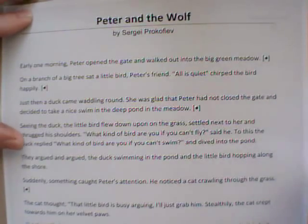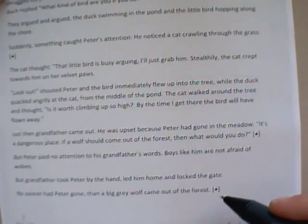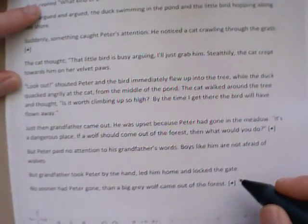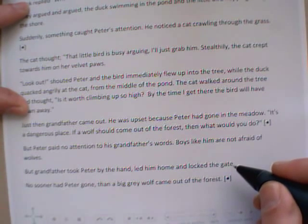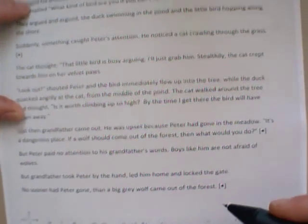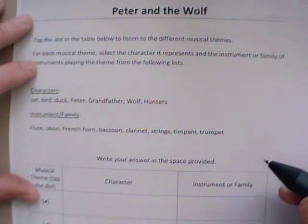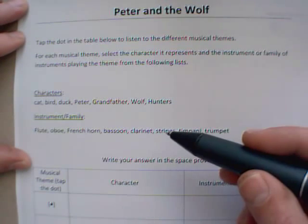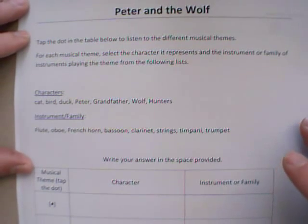They hear the musical theme for the character and can go through the passage or story. As you can see, there are little dots in different places — for example, the last one: 'the big grey wolf came out of the forest.' So they have this sheet they can reread or listen to the characters. You might design a question sheet so they have to tap on the dot and determine which character the theme is representing and which instrument or family is being used to play the character.